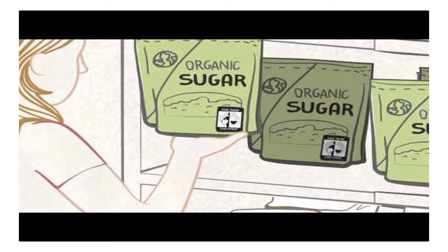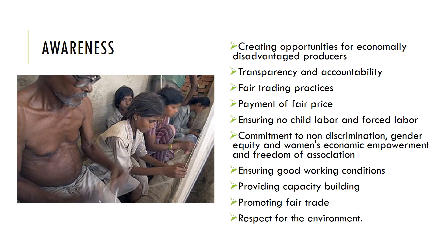The goals of fair trade are to improve producers' livelihoods and communities. It aims to bring awareness and advocate for change. Being part of fair trade means committing to non-discrimination, paying fair prices, maintaining good working conditions, and respecting the environment. There are around 4,500 types of fair trade products.